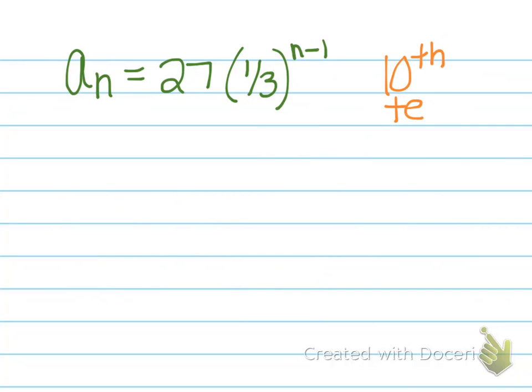If we looked at that second example I gave you where our ratio was 1/3, that explicit formula is a sub n equals 27 because that was the first term times 1/3 the ratio to the exponent of n minus 1. And again, if we're looking for the 10th term, you just plug 10 in where there was an n and you have a sub 10 is 27 times 1 over 3 to the 10 minus 1 power and you get 1 over 729.